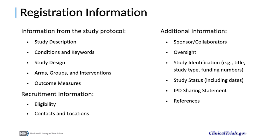Registered trials include information about the study protocol, including a description of the study, conditions and keywords, details about the study design, the arms or groups and interventions being analyzed, and the pre-specified outcome measures. They also include recruitment information that clarifies the inclusion and exclusion criteria and the locations and context for the study. Additional information is included in modules that list sponsors and collaborators, oversight for the study, information to identify the study, the study status and dates related to the progression of the study, a sharing statement for individual participant data, and a list of references relevant to the study.